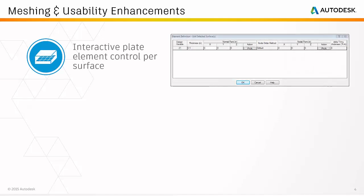Now let's move on to meshing and usability enhancements. In static stress analyses, plate elements can have varying element definitions on a per-part or per-surface basis. The 2017 release allows you to make this distinction directly using a new browser entry. In static stress analyses you can now interactively change the thickness, element normal point, and nodal point inputs.